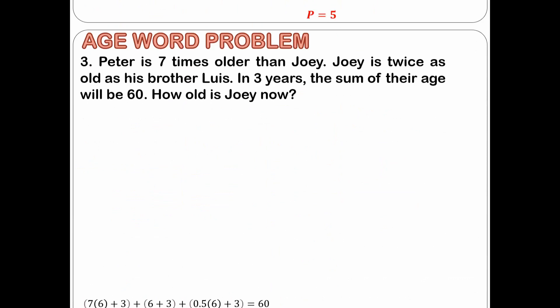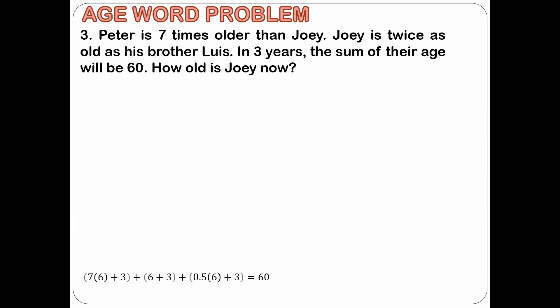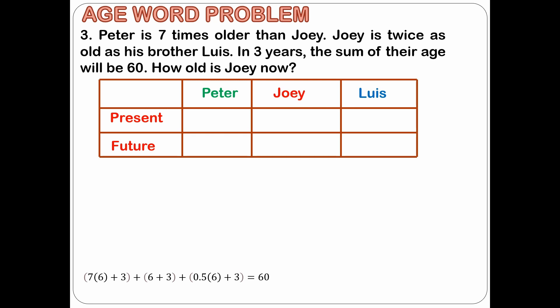Let's solve one more problem. Here is our problem number 3. Peter is 7 times older than Joey. Joey is twice as old as his brother Luis. In 3 years, the sum of their ages will be 60. How old is Joey now? Notice in the problem that there are 2 keywords: the present and the future. There are 3 persons involved: Peter, Joey, and Luis. The best way to start is to set up a table to clearly write an equation for each person under the present and future time period. We will call Peter's present age as letter P, Joey as letter J, and Luis as letter L.